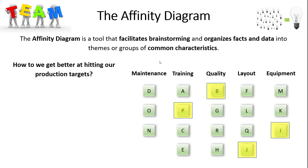Once you've done this categorization, you can sit down with your team and identify the most important themes. For example, these are the four things we want to focus on most to get better at hitting our production targets.